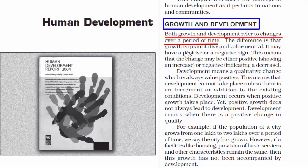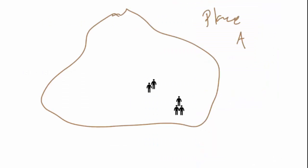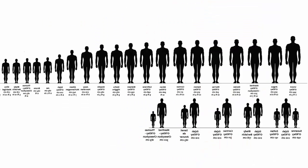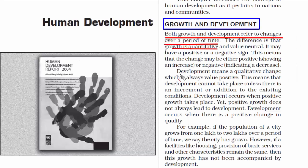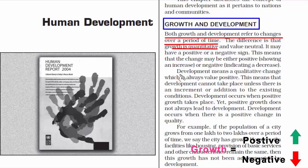The difference between growth and development is that we can quantify growth, meaning we can measure it in terms of numbers or values. For example, if a population grows, we can count them; if someone's height increases, we can measure it. Growth can be both positive as well as negative — the numbers or values can increase or decrease, meaning the change may be either positive or negative.